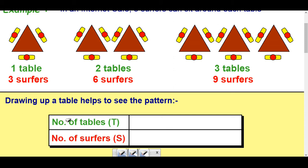So what you do is you write what the two things are, the two variables. We've got tables here and we've got number of surfers, and we're going to shorten tables to T and shorten surfers to S and that's really for a formula. So let's look at that. So we've got one table, three surfers, there it is there. Two tables, six surfers. Three tables, nine surfers.